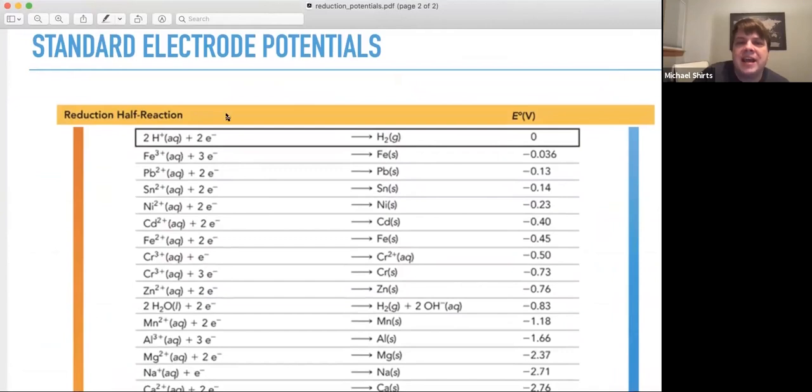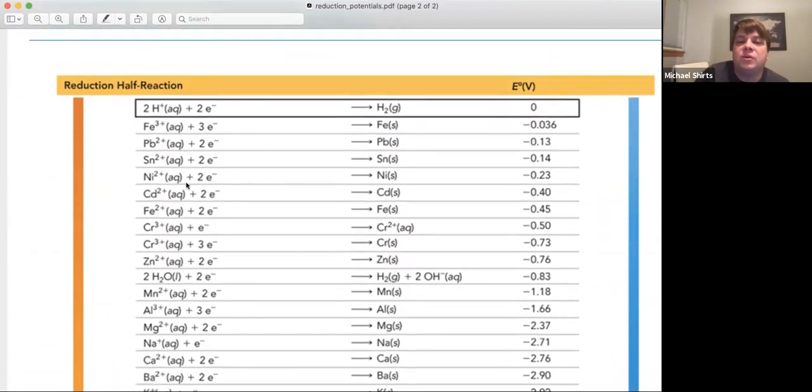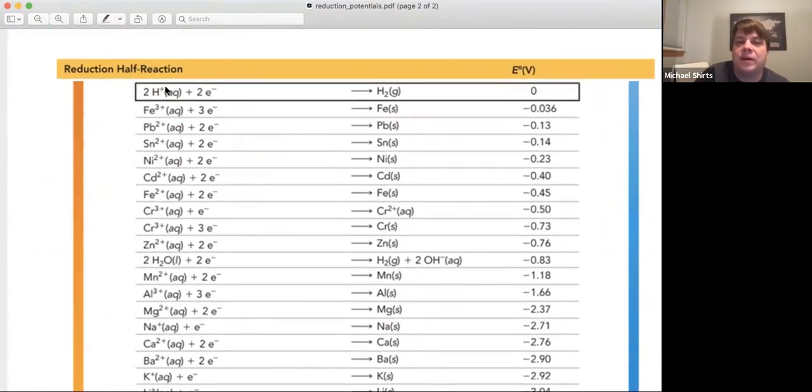You flip this around to get an oxidation and you get a positive electric potential here. So combine it with anything below iron, lead, whatever, you will get a reaction happening with acid.